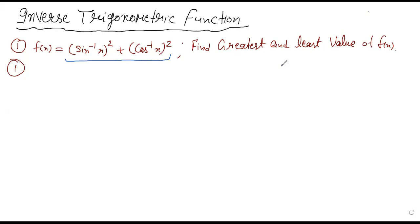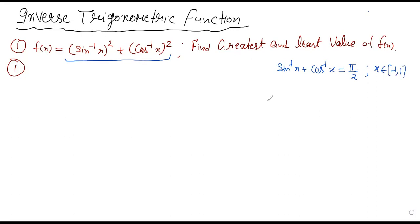We all know the result: sin⁻¹x + cos⁻¹x = π/2, where x is between −1 and 1, which is the domain. So sin⁻¹x + cos⁻¹x = π/2. We will try to convert this function into a single inverse trigonometric function.